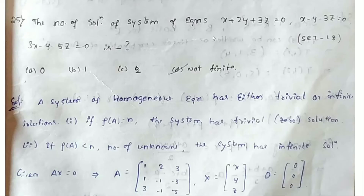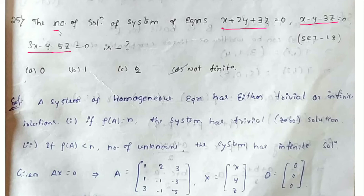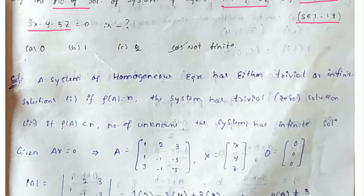Moving to the next question: find the number of solutions of a system of equations. We have homogeneous equations here, so we write AX equals 0. A system of homogeneous equations has either trivial solutions or infinite solutions. There are two conditions: if the rank of the matrix equals n, the system has only the trivial or zero solution.